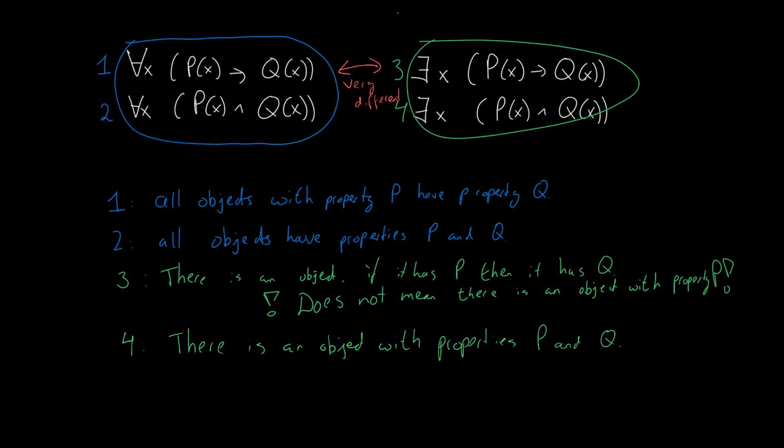You often want to say something about all objects having property p also having something else. Consider for instance a statement like all humans are mortal. You want to say something about all things that have the property of being human also having the property of being mortal.